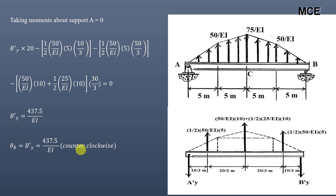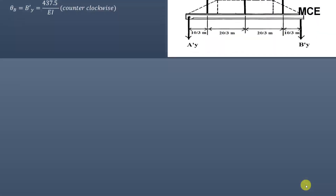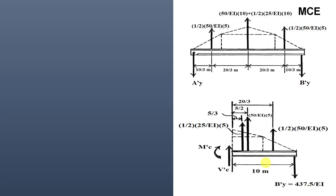Next, we find the moment at C in the conjugate beam, which equals the displacement at C in the real beam. We cut a section at point C and consider only the right portion (CB), since we already know the value of B'y. The total length of this section is 10 meters.